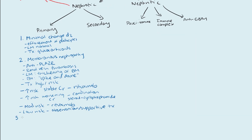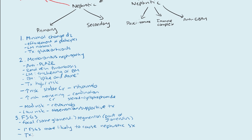Your last primary nephrotic syndrome is FSGS — focal segmental glomerulosclerosis. Focal means only some of the glomeruli are involved; segmental means that even in the affected glomeruli, only part of the glomerulus is affected. Primary FSGS is more likely to cause nephrotic syndrome than secondary FSGS. Treatment is glucocorticoids versus calcineurin inhibitors if the patient has a high risk for adverse events from steroids. Those are your three main ones for primary nephrotic syndrome: minimal change disease, membranous nephropathy, and FSGS.